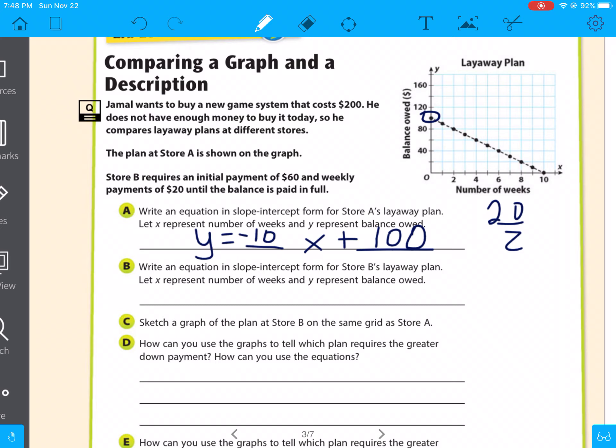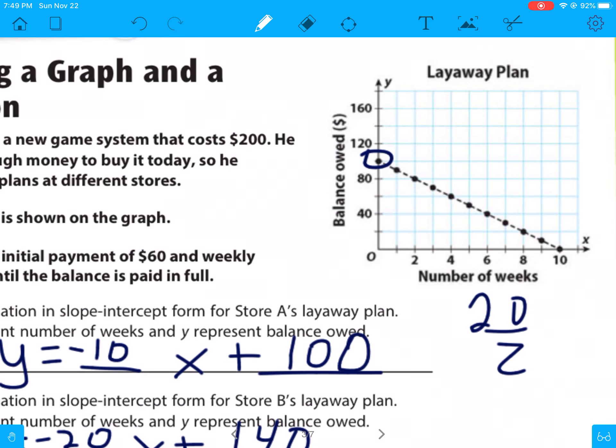So now the next one for B, write an equation in slope intercept form for B's layaway plan. So we're going to do our same y equals something x plus our y intercept, or initial cost. So if B requires an initial payment of $60, the amount he has to still pay on is $140. But then they're paying $20 a month. So this is going to be a negative 20. So now it says sketch a graph of the plan on store B on the same grid as A. So our y intercept will be higher at $160. But then it pays off. You pay off $20 each month. So it looks like they pay it off in 8 weeks.